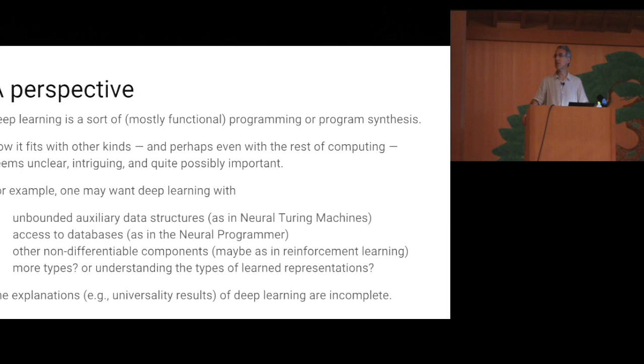For example, there is work on enhancing neural networks with unbounded auxiliary data structures. For example, something called the neural Turing machines have access to random access memory. There is also work on neural networks that can use little databases, a project called the Neural Programmer, in which a neural network can query tables in order to come up with answers. Querying tables is not differentiable, but there are tricks for getting around that. More generally, there is various techniques for incorporating non-differentiable components into the world of neural networks, and a very big hammer in that is what is known as reinforcement learning, which is what was used, for example, for AlphaGo.